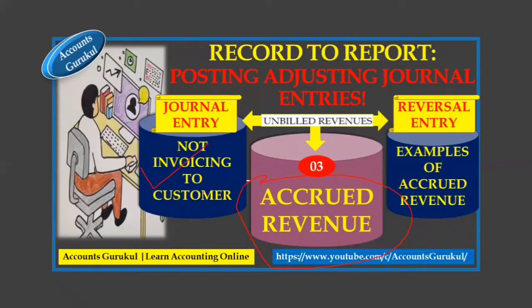Accrued revenue or unbilled revenue commonly comes into the picture in the construction industry and service industry. In construction, invoices are raised based on stages of construction — for each stage we generate revenue and raise the invoice. When approaching month-end or year-end, whatever work has been completed must be booked into our systems as accrued revenue. In the next month, when we generate the revenue, we raise the actual invoice.